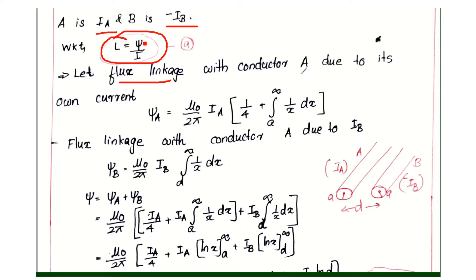Let flux linkage with conductor A due to its own current. ψA is equal to μ₀ divided by 2π times IA, into 1 by 4 plus integral A to infinity, 1 by x dx.